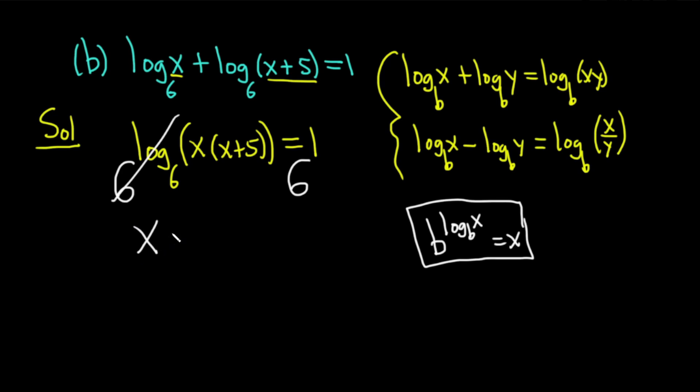You get x parentheses x plus 5, and that's equal to 6 to the 1, which is just 6. If you had a log base 3 here, you would use a 3. If you had a log base 4, you would use a 4. If you had a natural log, you would use an e, because the base for the natural log is e. So very powerful formula.